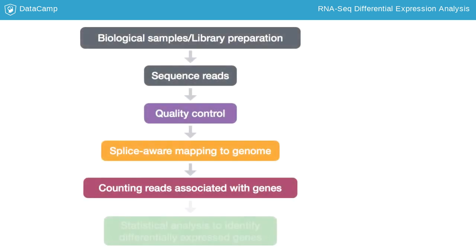The output of alignment gives the genome coordinates for where the read most likely originated, and information about the quality of the mapping. Following alignment, the reads aligning to the exons of each gene are quantified to yield a matrix of gene counts. For the entire process up until this point, we use command line tools, which can handle the large sequencing files and computational demands.